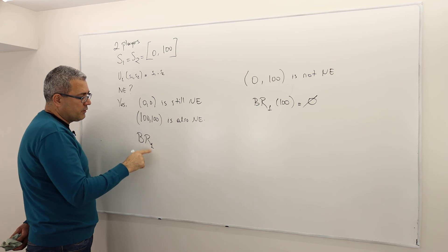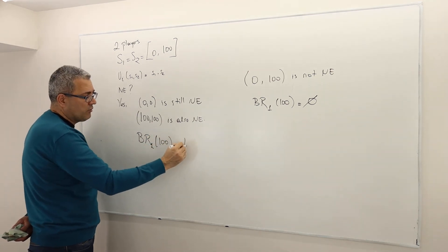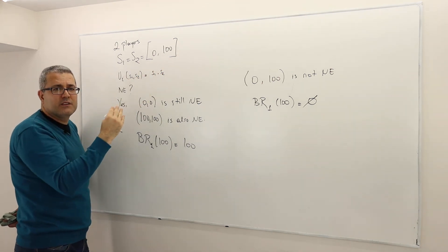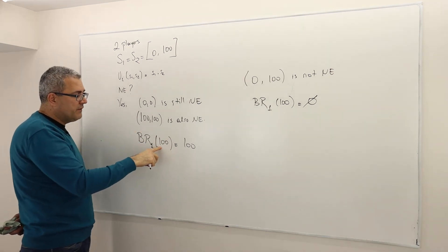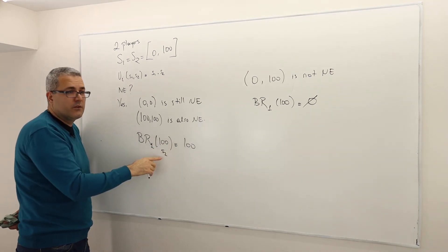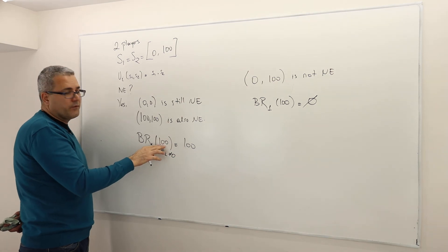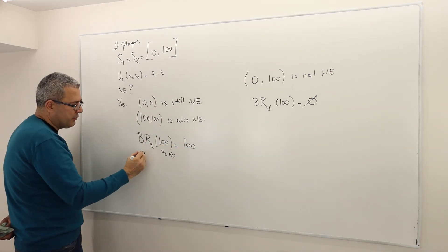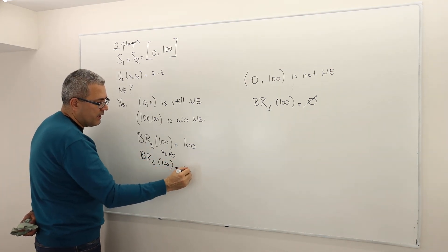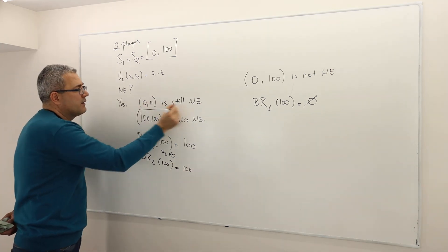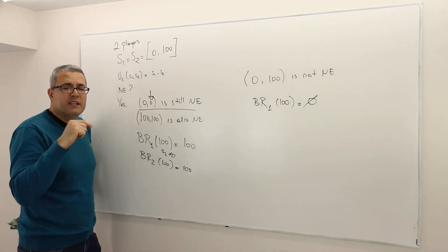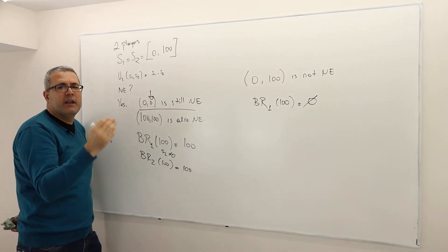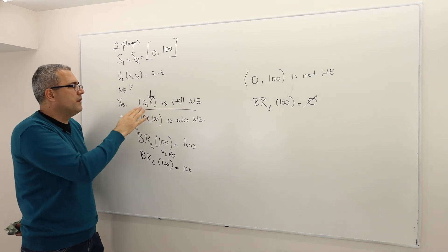Why is hundred-hundred a Nash equilibrium all of a sudden? Because the best response for player one, given that his opponent has selected hundred, is now hundred. Why? Because there is no better number — hundred-and-one or 10,000 are not allowed strategies. So the best strategy, given that your opponent is choosing hundred, or in fact any S2 other than zero, is hundred. Therefore, same for the second player — the best response given that the first player selects hundred is hundred. So hundred-hundred is a Nash equilibrium. But zero-zero is still Nash because given that my opponent is selecting zero, my number will be multiplied by zero and I get zero payoff regardless, so I'm indifferent and zero is the best response.